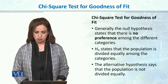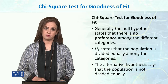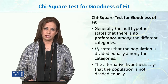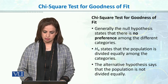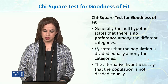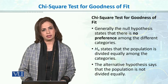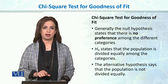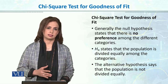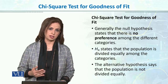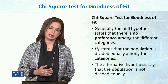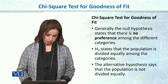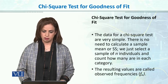Generally, the null hypothesis states there is no preference among the different categories — meaning frequencies will be equal in the categories. The alternative hypothesis states that the population is not divided equally. Just as in parametric tests we form null and alternative hypotheses, similarly in non-parametric chi-square tests, the null states categories are equally divided and the alternative states they are not.